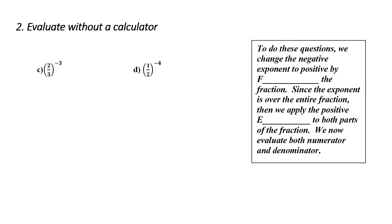Evaluate without a calculator — example 2: a negative exponent over a fraction. First step: get rid of the negative exponent by taking the reciprocal — flip the original fraction. Then apply the exponent to both bases inside the bracket to remove the brackets. Finally, apply the exponent to each base: 3 cubed is 27 and 2 cubed is 8. That's as far as we can go without decimals, so that's the final answer.